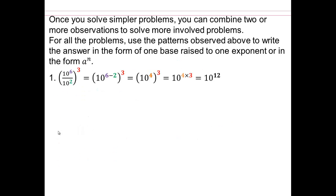Now that you've solved simpler problems, let's combine what we had in the previous lecture with this one. We already know that 10 to the 6 over 10 to the 2, we can subtract exponents to get 10 to the 4. And now we have 10 to the 4, to the 3rd power. We already know how to do that: 10 to the 4, three times, gives us 10 to the 12th.